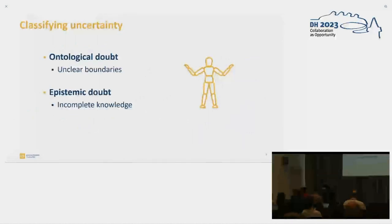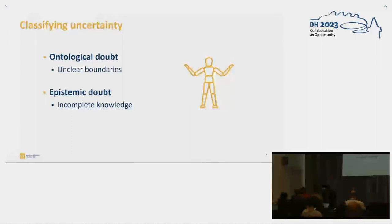When talking about uncertainty, it might be useful to divide that into ontological doubt — or ontological uncertainty — and epistemic doubt. Ontological doubt is about the boundaries themselves: if you want to label things, you also need to decide which labels to use. In this talk, we'll focus on ontological doubt.